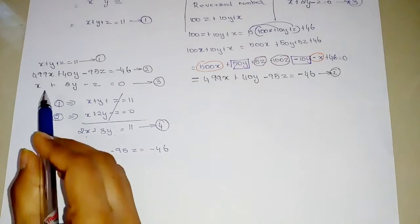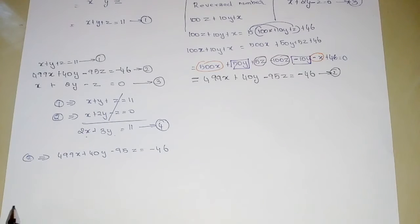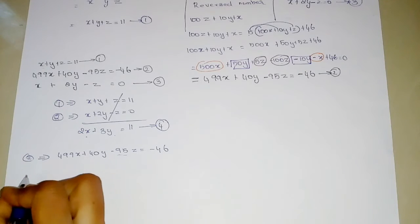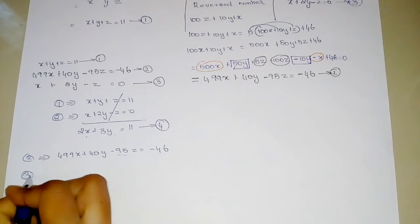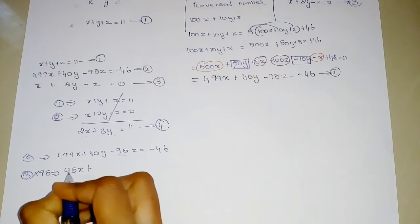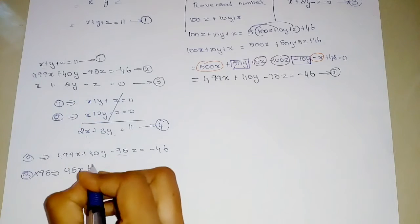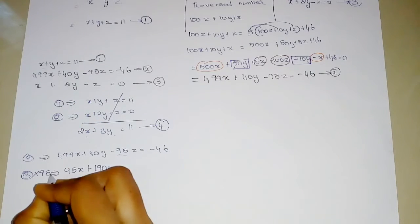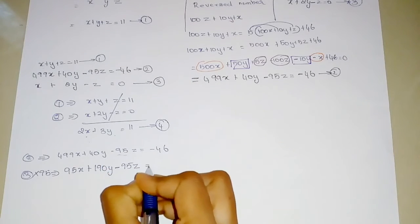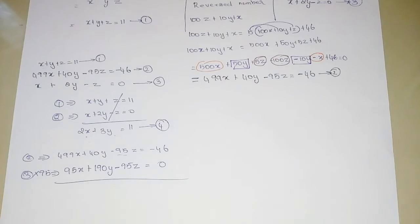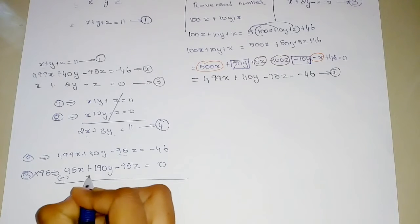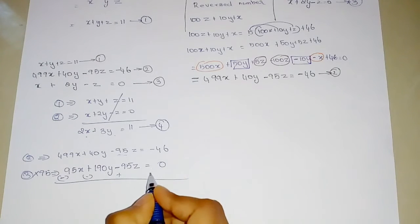Multiplying Equation 3 by 95 gives: 95X plus 95 into 2Y which is 190Y minus 95Z equals 0. Now subtracting to strike out the Z value: minus minus gives plus, so the Z terms cancel out.